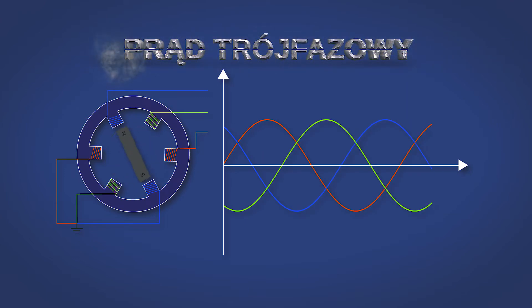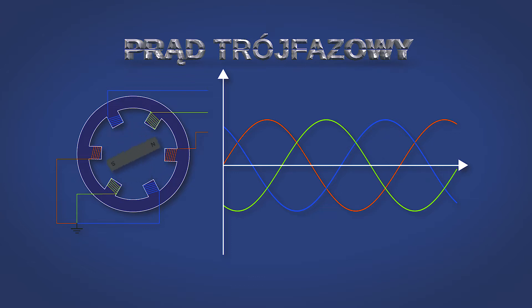W elektrowniach wytwarzany jest zazwyczaj prąd trójfazowy. Dzięki temu generator w elektrowni pracuje w bardziej wydajny sposób, zasilając podczas jednego obrotu trzy linie przesyłowe. Sinusoidy poszczególnych faz są przesunięte względem siebie o 120 stopni.